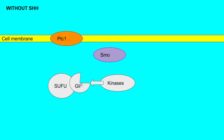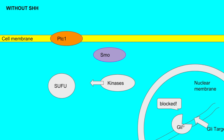This cleaved GLI is then able to enter into the nucleus and block the traditional GLI targets, which are usually growth-related. So as we can see, without sonic hedgehog inhibiting patched one, the cleaved GLI is able to block such targets.